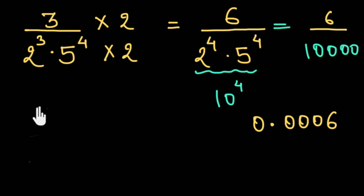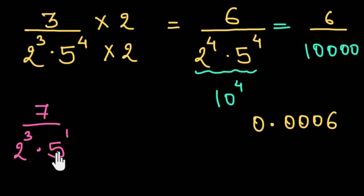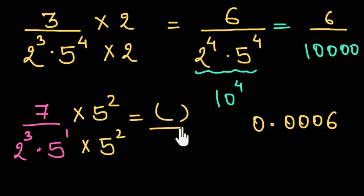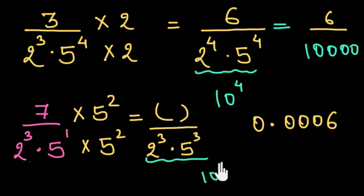Similarly, let's say we had 7 upon 2 cubed times 5 to the power 1. We know that to get a power of 10 in the denominator, we need equal numbers of 2s and 5s. We can get that by multiplying both numerator and denominator by 5 squared. This gives us 7 times 5 squared in the numerator divided by 2 cubed times 5 cubed. This denominator equals 10 to the power 3, making this rational number terminating.